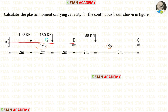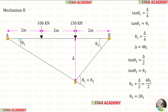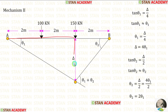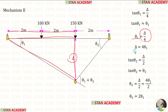Now let us make the second mechanism in span AB. In this mechanism, we assume that the third plastic hinge occurs under the point load 150 kN. Let us keep this angle as theta 1 and this angle as theta 2, so the total angle should be theta 1 plus theta 2. In the left triangle, theta 1 equals delta upon 4, giving delta equal to 4 theta 1.